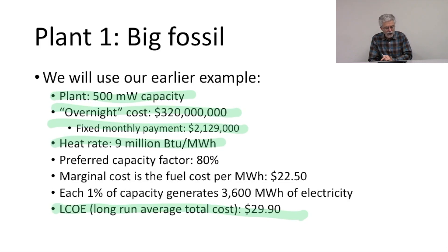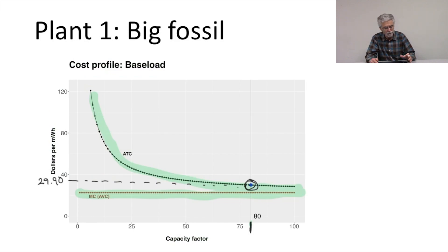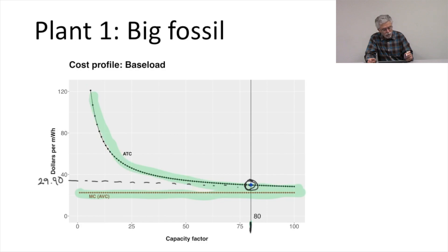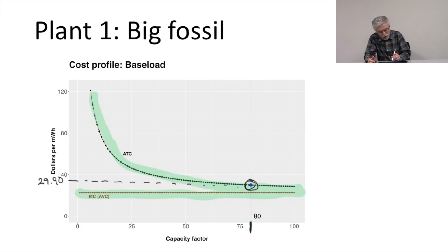Let's take a look at the average and variable cost for this power plant. Big Fossil has an average total cost here, and here's our marginal and average variable cost curve. Remember, this is the same because we have a constant heat rate for this power plant. We expect this plant to run at 80% capacity factor, and here is our expected average capacity factor over the lifetime of the plant. The average total cost at 80% capacity factor is our levelized cost of energy, which was $29.90.